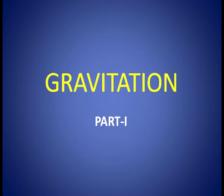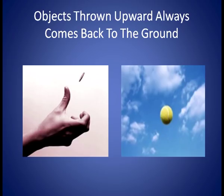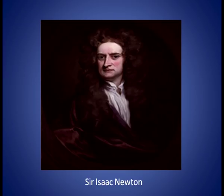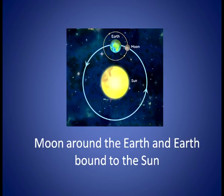Dear Learners, let us discuss this chapter on Gravitation. Have you ever thought why a ball thrown upward always comes back to the ground, or a coin tossed in air falls back on the ground? Since time immemorial, human beings have wondered about this phenomenon. The answer was provided in the 17th century by Sir Isaac Newton. He proposed that the gravitational force is responsible for bodies being attracted to the earth, and that it is the same force which keeps the moon in its orbit around the earth and planets bound to the sun.